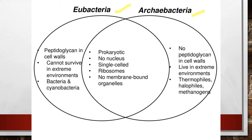Now let's see the differences and similarities between Archibacteria and Eubacteria. In Eubacteria, a peptidoglycan layer in the cell wall is present; they cannot survive in extreme environments; and an example is cyanobacteria. Archibacteria don't have a peptidoglycan layer; they can survive in extreme conditions and are classified as thermophiles, halophiles, and methanogens. Both are prokaryotic — without a nucleus — unicellular, with ribosomes but lacking membrane-bound organelles.